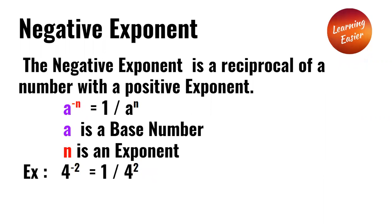Negative exponents. The negative exponent is a reciprocal of a number with a positive exponent. A to the power of negative n is equal to 1 over a to the power of n. A is the base number, n is the exponent. Example: 4 to the power of negative 2 is equal to 1 over 4 to the power of 2.